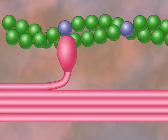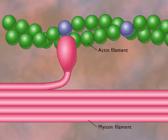Myofilaments are composed of strings of the proteins actin and myosin. An actin filament has two strands of actin molecules wrapped together. A myosin filament has many myosin proteins packed together, and each myosin protein has a globular head region that protrudes from the filament.